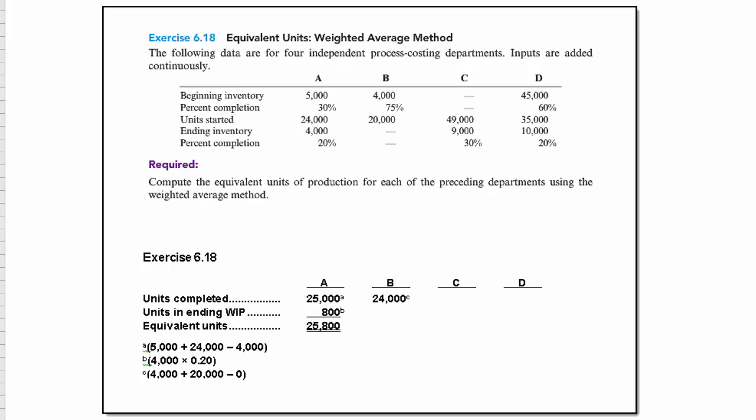Let's explore exercise 6-18. This exercise uses equivalent units, which we know is a part of process cost accounting or a process costing system, using the weighted average method.